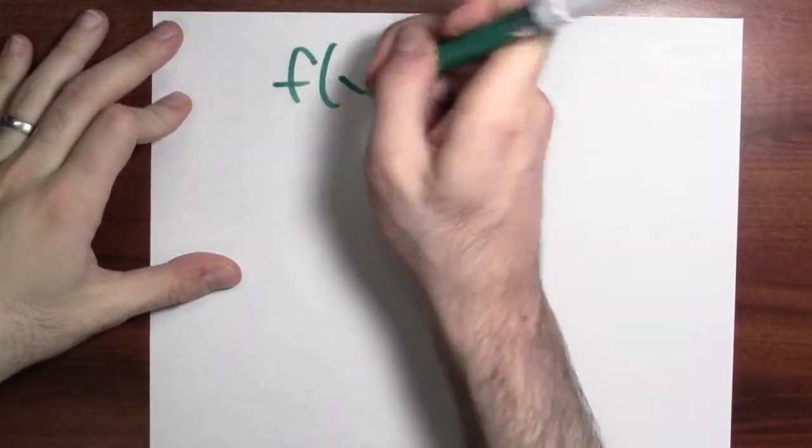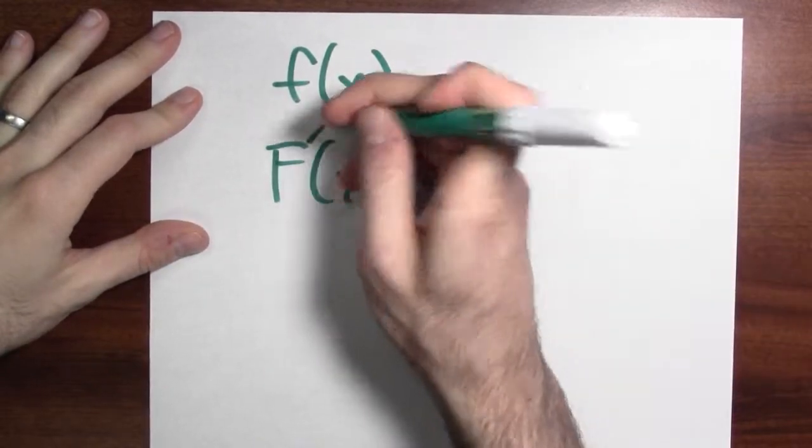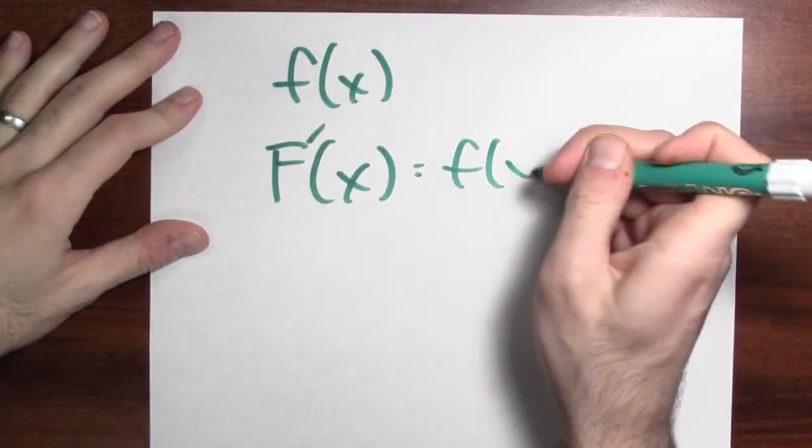Remember back to those good old days when we were approximating anti-derivatives by using Euler's method? I maybe started with some function, little f, and I wanted to numerically approximate a function, big F, whose derivative was little f.